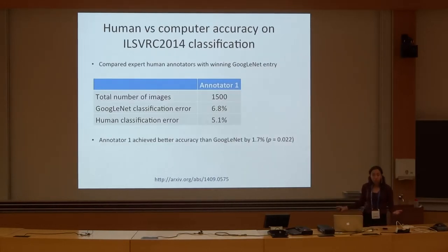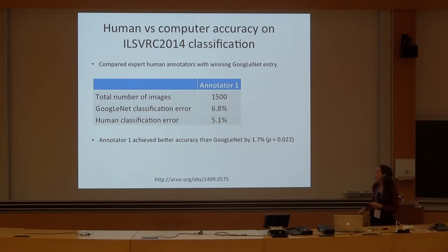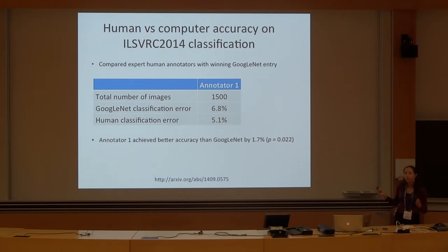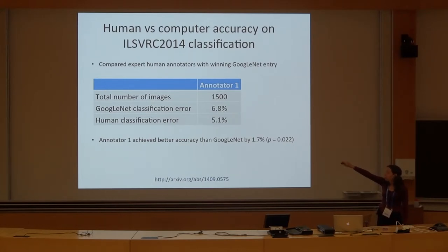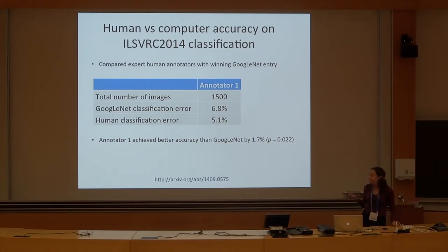In this result, it was a secret annotator 1 — an expert human annotator who was willing to spend about one to five minutes annotating each image. He went through and annotated 1,500 images among the 100,000. On this set, GoogleNet — the winning classification entry this year — had an error of 6.8%. And the human classification error was 5.1%. The human annotator indeed achieved better accuracy, and this is statistically significant.